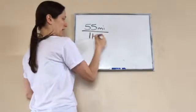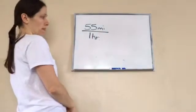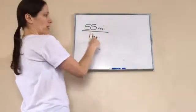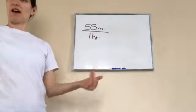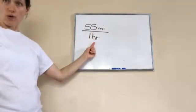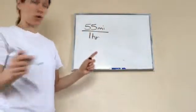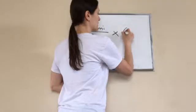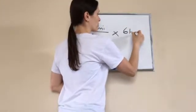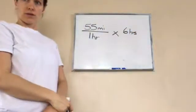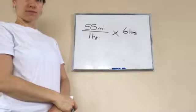So, I'm going to put one hour, because hour means one hour. 55 miles per hour. So, it'd be like a car that goes 55 miles per hour. And we're going to travel for six hours, times six hours. Okay.